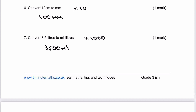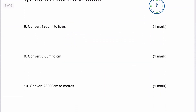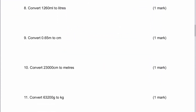Hopefully that's okay for you. If you're not sure about anything, please post a comment and I will come back to you. Let's have a look at number eight and nine. So 1,260 millilitres to litres — I'm going to divide by 1,000, moving the decimal point three places, giving 1.26 litres. And 0.65 metres to centimetres — I need to multiply by 100 because there are 100 centimetres in a metre, and therefore I'm going to get 65 centimetres.